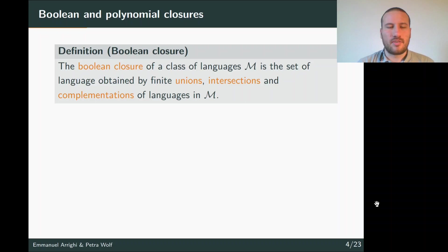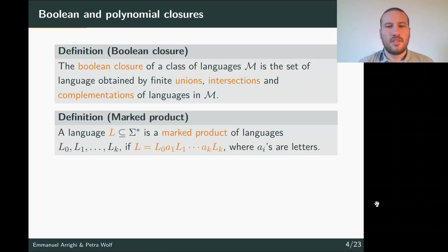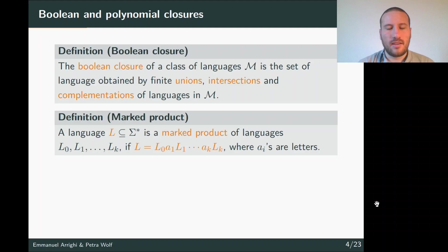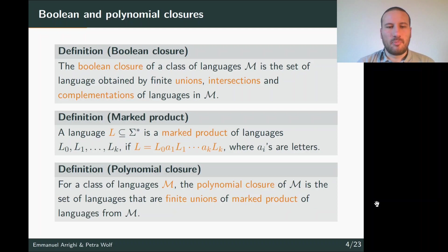To define the two hierarchies we need two closure operations. First, the boolean closure: the boolean closure of a class M is the set of languages obtained by finite union, intersection, and complementation of languages in M. For the second operation, we define the marked product: given languages L0, L1, ..., Lk, the marked product is the language L0 a1 L1 a2 ... ak Lk, i.e., the concatenation of each Li with a specific letter in between. The polynomial closure of M is the set of all finite unions of marked products of languages in M.